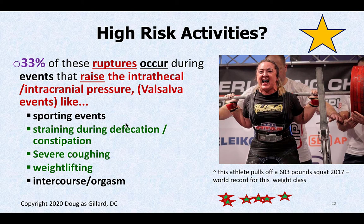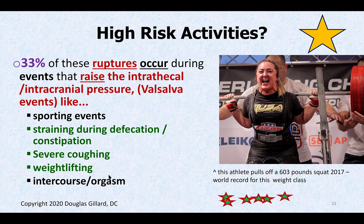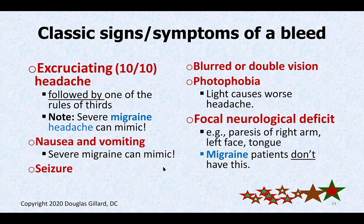What increases the chances of it popping and hemorrhaging? Anything that increases intrathecal pressure — like Valsalva's maneuver. During a Valsalva event, the face gets red, jugular veins pop out, the person holds their breath — that pressurizes the pipes. If you have a weak pipe, it has a chance of breaking. This includes lifting weights, being constipated and straining on the toilet, severe coughing attacks in people with COPD, sporting events, and having an orgasm — anything like that.